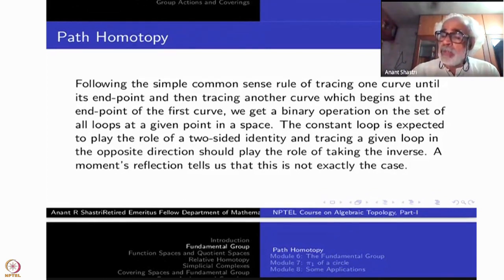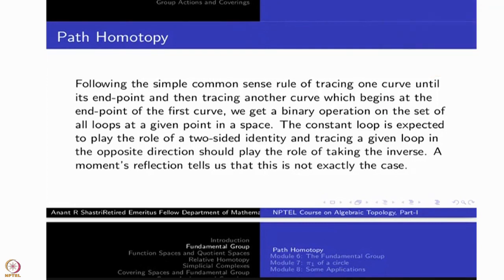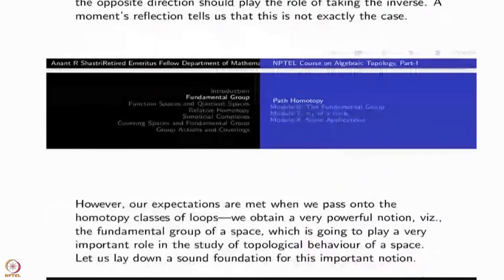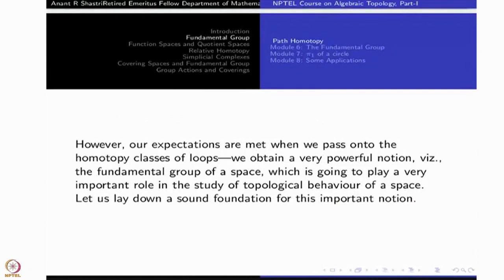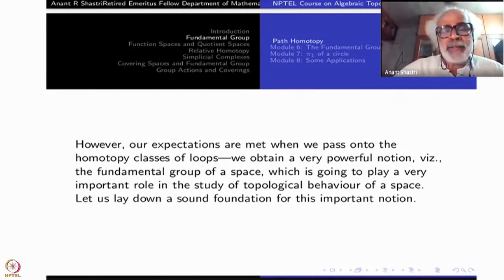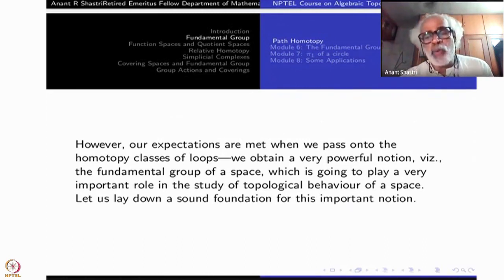Another thing is, if you trace a path in the opposite direction, it should be treated as the inverse of the path. You have gone through this one, but finally you have come back the same way. So it's as if you have done nothing. So this kind of thing one has to do. However, our expectations are met only when we pass on to the homotopy classes of loops. Otherwise, as functions, they are never the same. So this is what we want to emphasize. We obtain a powerful notion, namely fundamental group only when we go to homotopy classes of loops. Which is going to play a very important role in the topological behavior of a space.